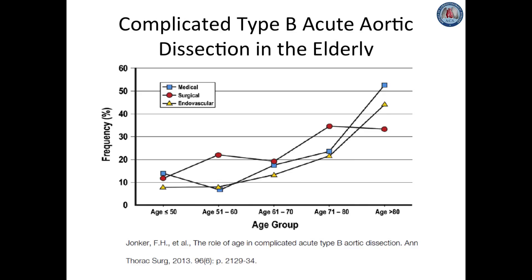Complicated acute type B aortic dissection in the elderly shows an even more striking mortality. John Kerr and team found that in IRAD, in-hospital mortality in complicated patients greater than 70 years of age was 30% versus 10% for those younger than 70 treated with TEVAR; 34% versus 17% for those treated surgically; and 32% versus 14% for those treated with optimal medical management alone. Age greater than 70 was found to be an independent predictor for in-hospital mortality with an odds ratio of 2.4. Interestingly, though there was a significant decline in the rate of TEVAR or open surgical intervention in the elderly, there was also a non-significant trend towards decreased mortality in the elderly treated with TEVAR versus open surgery or medical management.